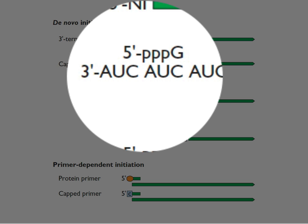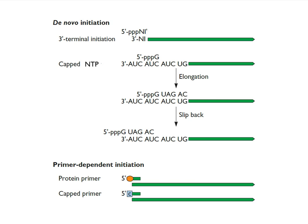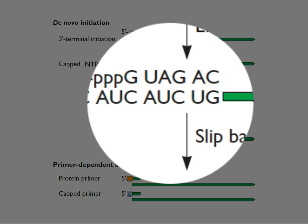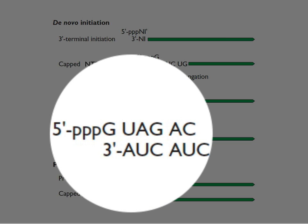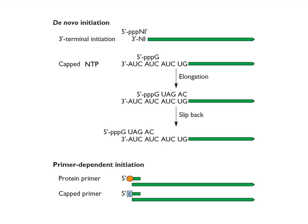Here's another example of priming de novo. In this case, instead of a nucleoside or an NTP, it's a capped NTP, but it's the same principle. And in this case, there's internal priming, some synthesis, and then the primer slides back to make a perfect match. The point here is that you don't need a primer. These are just two examples.